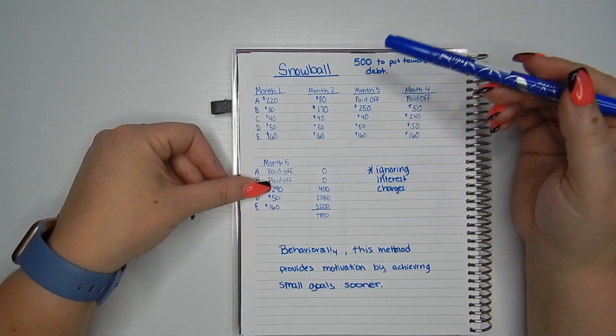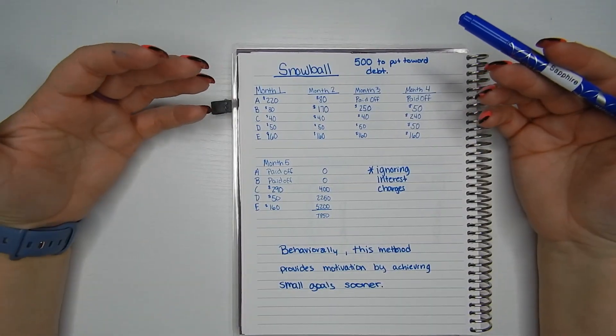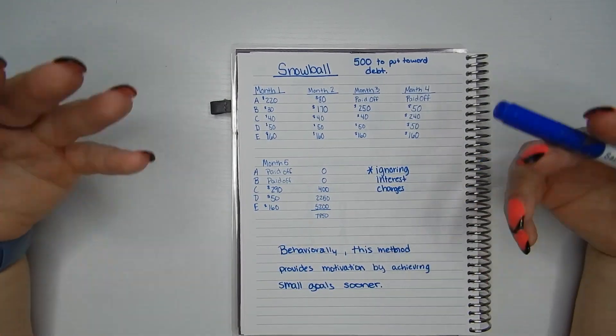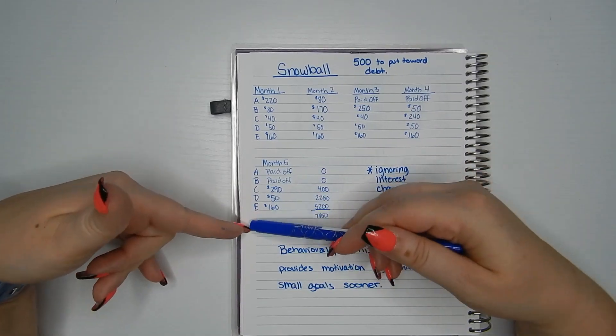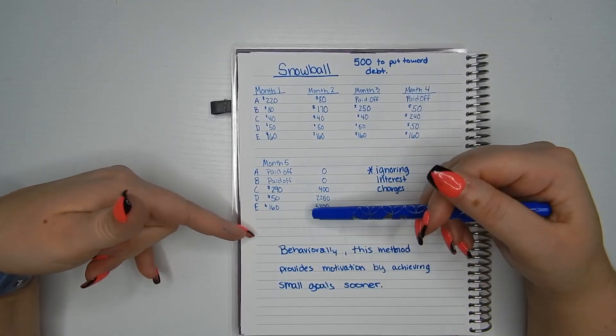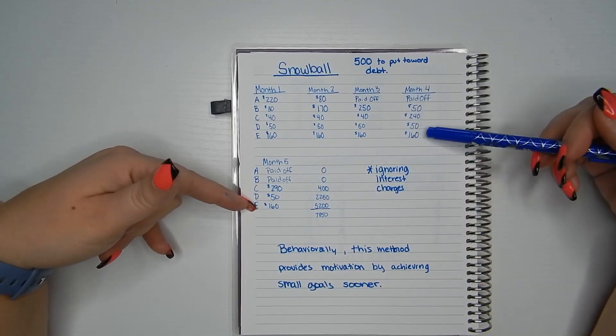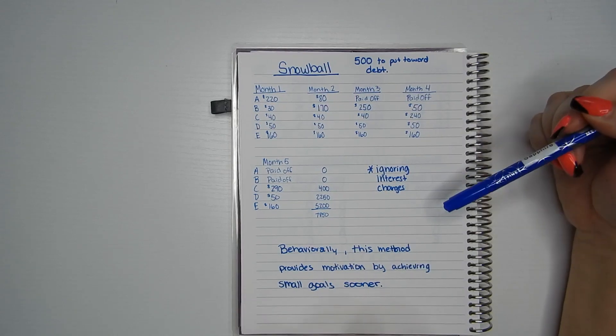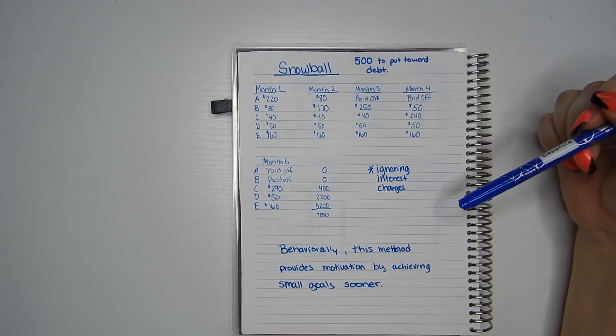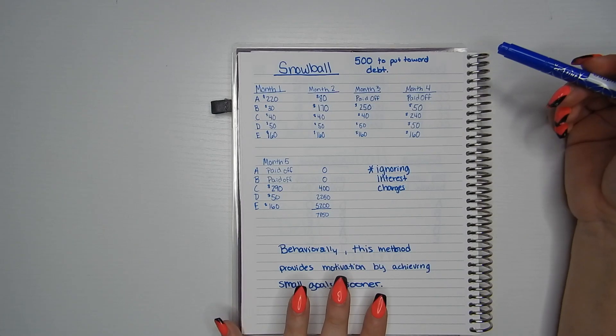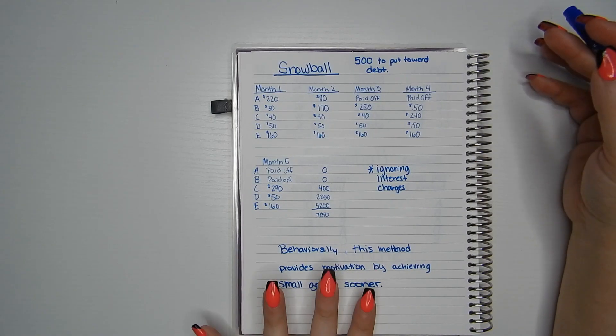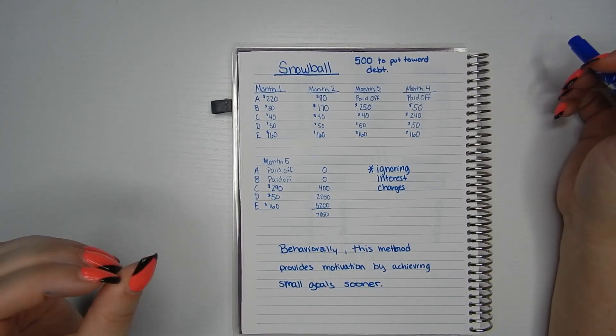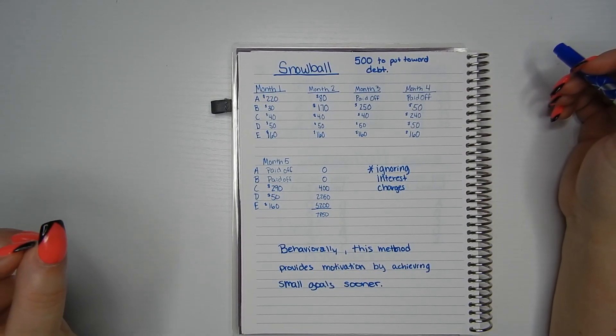So you can see where you're getting rewards and each little reward makes you keep going further. That snowballs building and building and building. So by the time you get done with this, you're putting all $500 to card E. Imagine how quickly that one's going to be paid off. So this is snowball. So behaviorally, this method provides motivation by achieving smaller goals sooner. If it doesn't make sense drop a question down in the comments and you can tell how excited I get about snowball because I love those little wins.